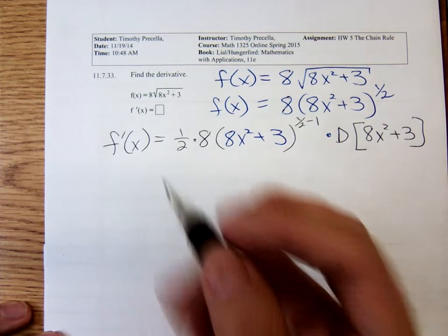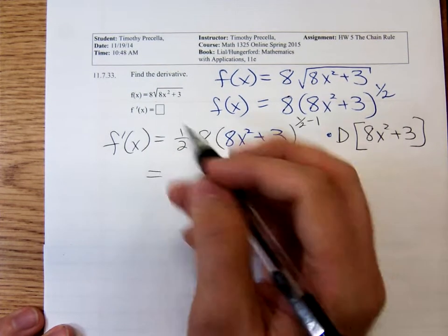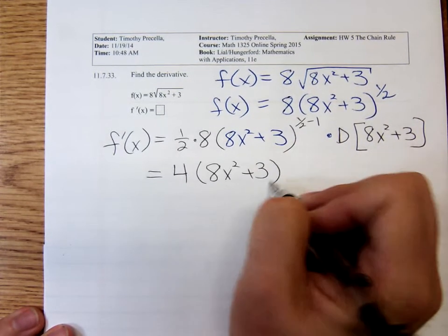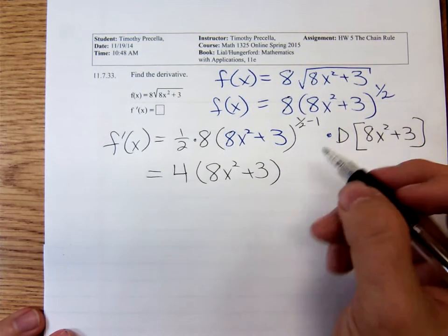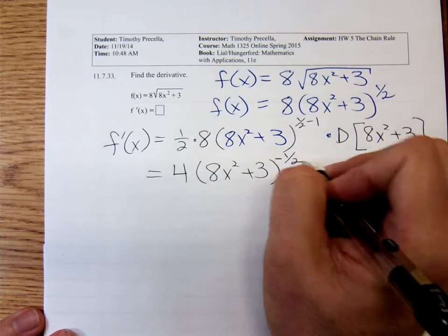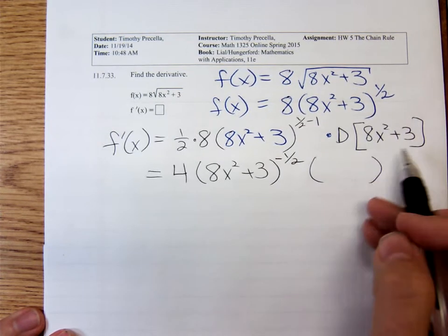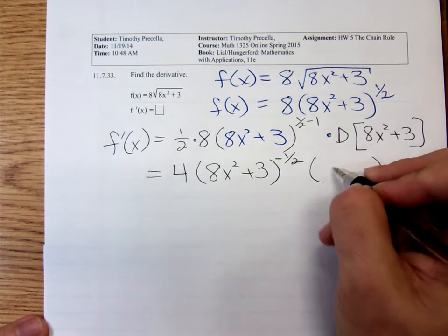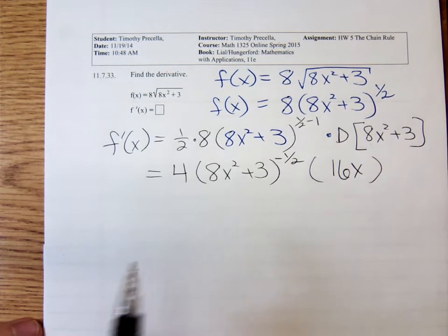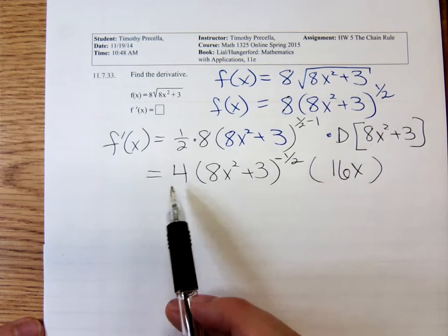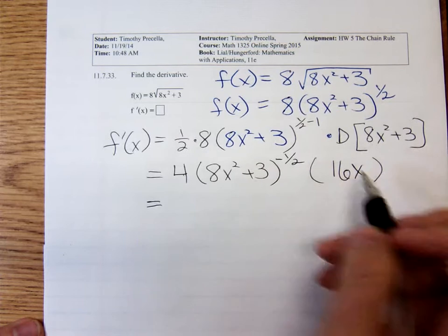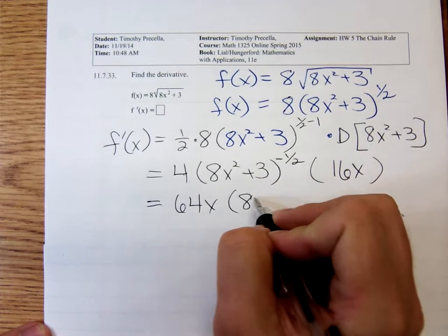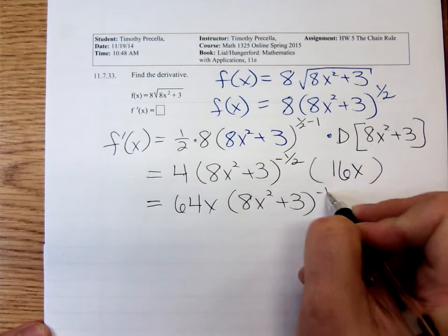Cleaning things up: 1 half times 8 is 4, giving us 4 times 8x squared plus 3 to the negative 1 half power. The derivative of 8x squared plus 3 is 16x. Multiplying the monomials: 4 times 16x gives 64x times 8x squared plus 3 to the negative 1 half.